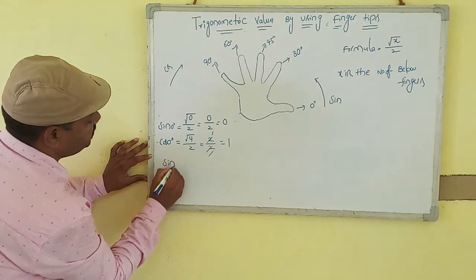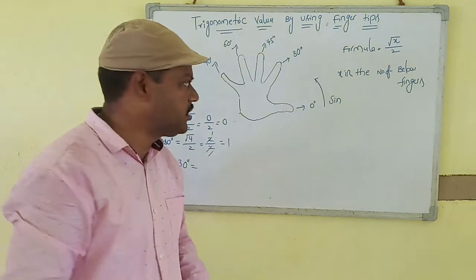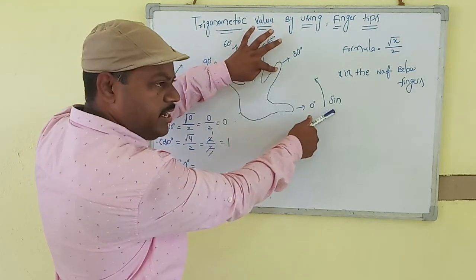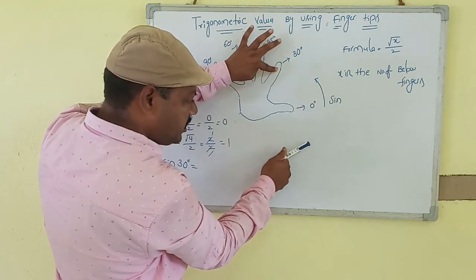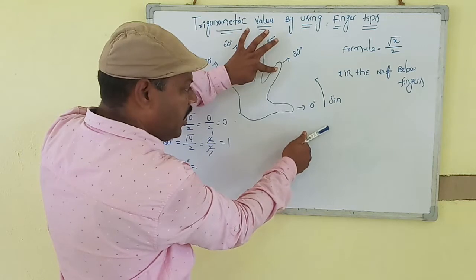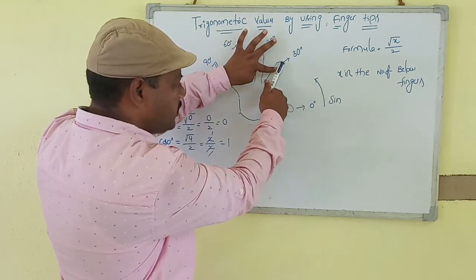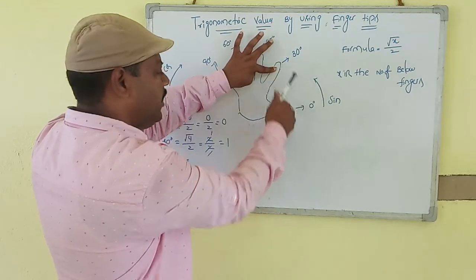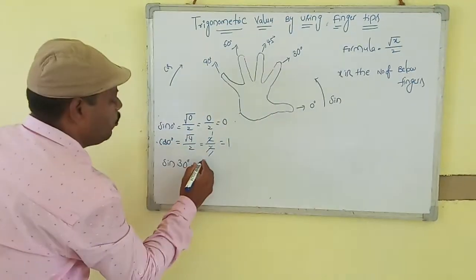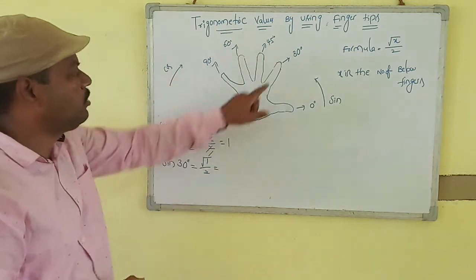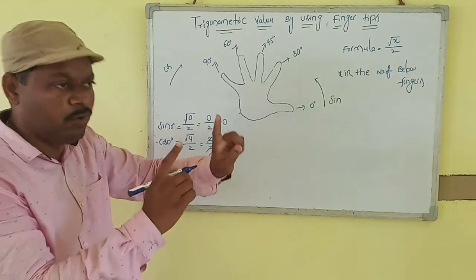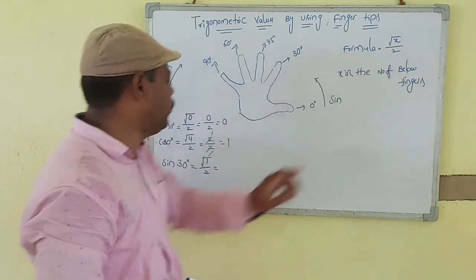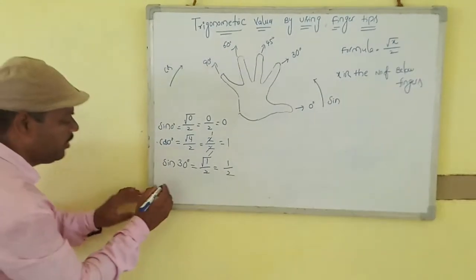Now find sine 30 degrees. Thirty degrees is the index finger. Moving in the sine (anti-clockwise) direction, how many fingers are below 30 degrees? Only one finger — the thumb. So sin 30° = √(1)/2 = 1/2.